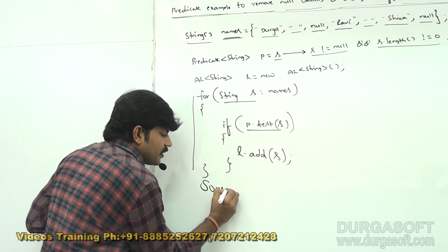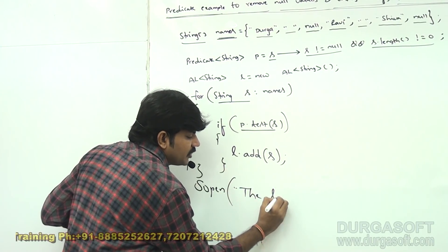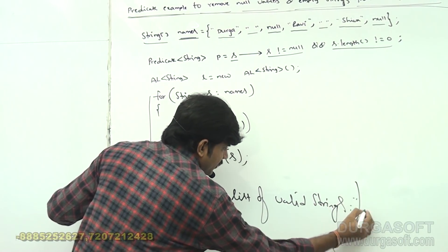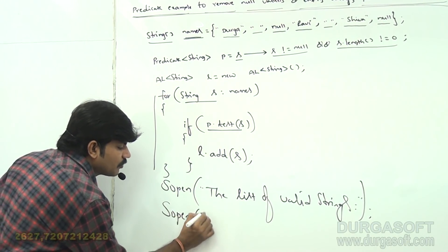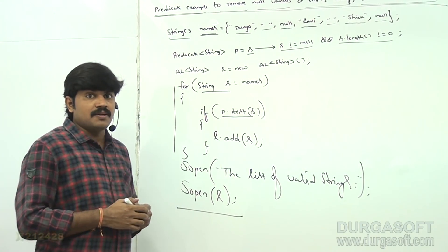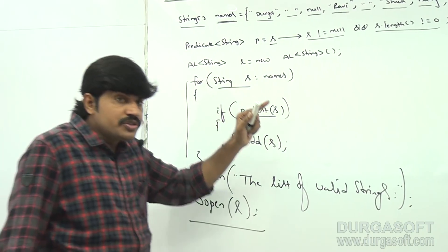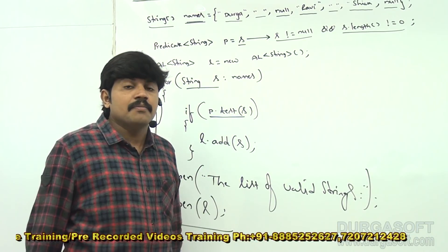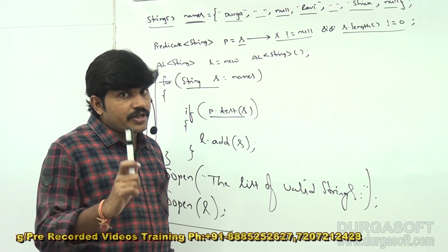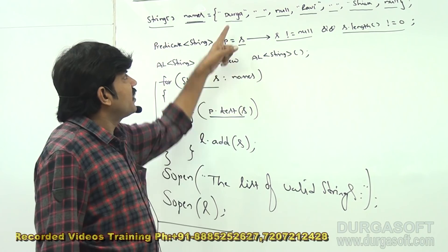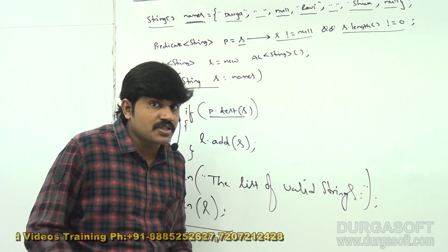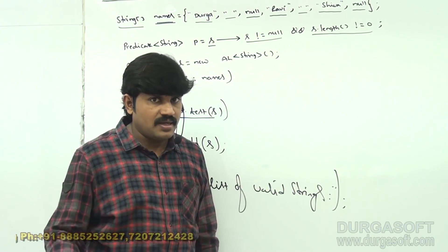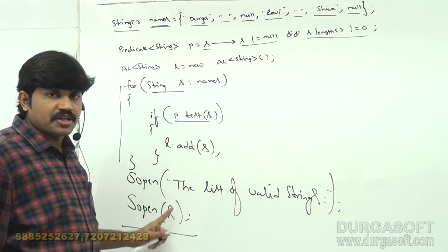Then System.out.println of 'l' to print the list of valid strings. This is a beautiful example to use a Predicate to check null values and empty strings — a very common requirement. If you don't take this much care, at runtime a NullPointerException may occur. We use Predicate to check whether the given string is null or not, and whether the length is zero or not. If it is null or length is zero, don't consider it.